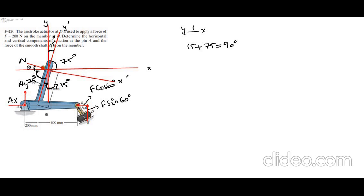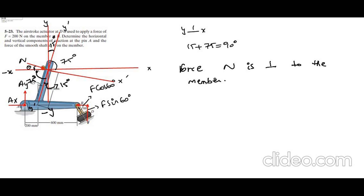The X' axis and the Y' axis are perpendicular. The Y' axis contains the member on which force N is directed, and force N is perpendicular to the member. This means theta plus 75 degrees equals 90 degrees, because Y' axis contains the member on which force N is directed. Therefore theta is equal to 15 degrees.